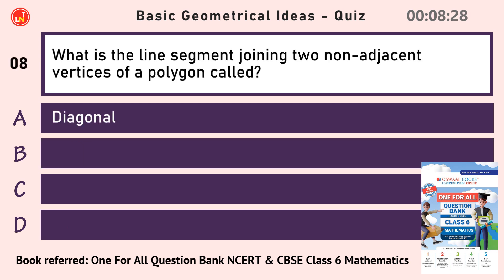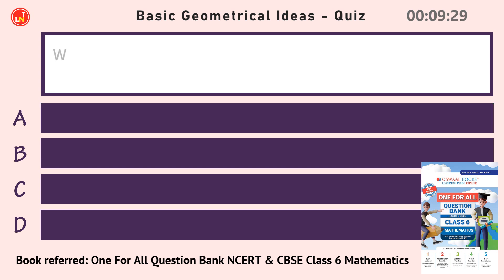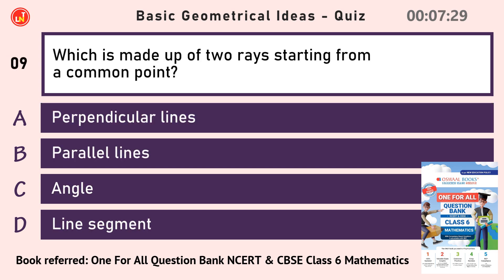What is the line segment joining two non-adjacent vertices of a polygon called? Diagonal. Which is made up of two rays starting from a common point? Angle.